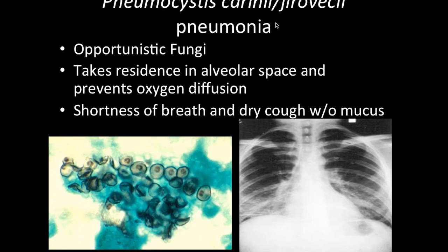Pneumocystis jiroveci pneumonia is an opportunistic fungus that takes residence in the alveoli spaces inside your lungs. On an x-ray, you can see it as white formations at the bottom of the lungs where the alveoli are present. It prevents oxygen diffusion, causing constant shortness of breath and a dry cough with no mucus. You can also observe the organism in a tissue sample.